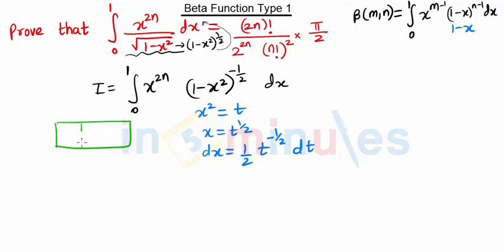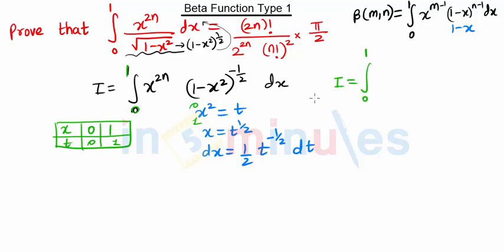Since we are changing the variable, our limits of integration will also change. The initial variable is x going from 0 to 1. When we put x equal to 0, t is also 0; when we put x equal to 1, t is also 1. So the new limits remain 0 to 1.